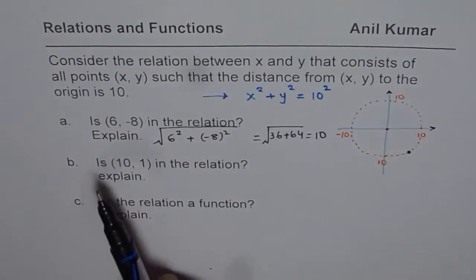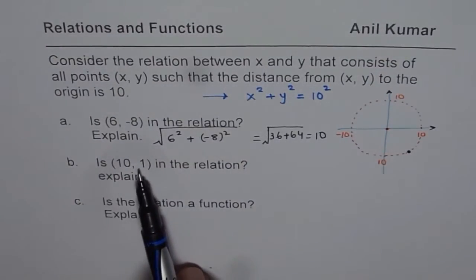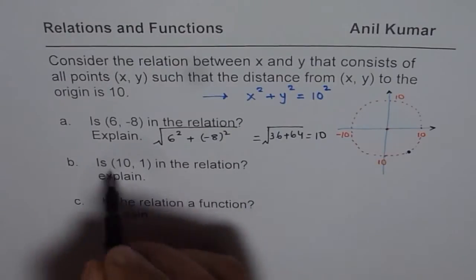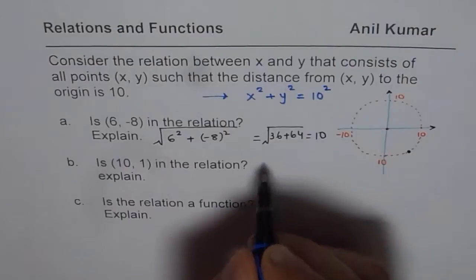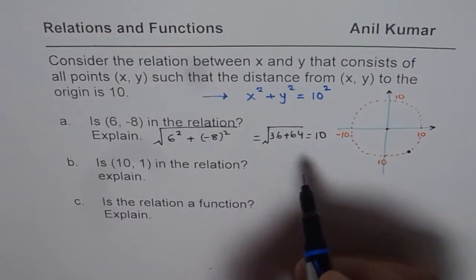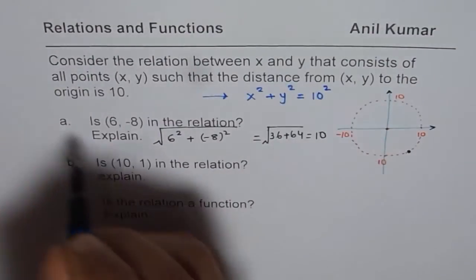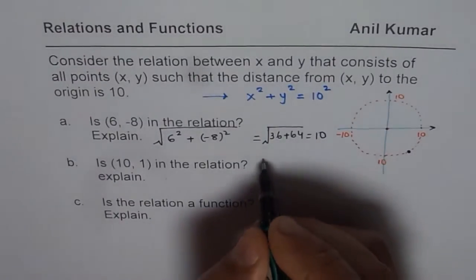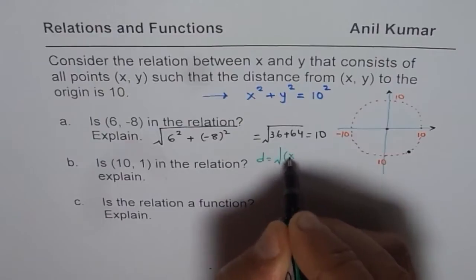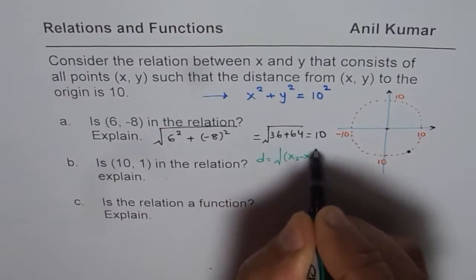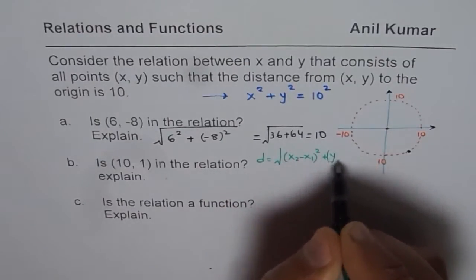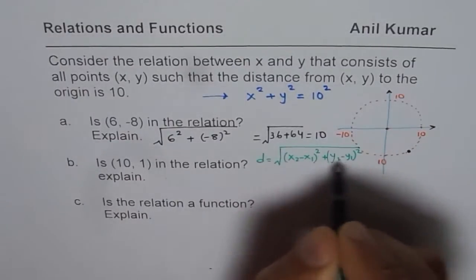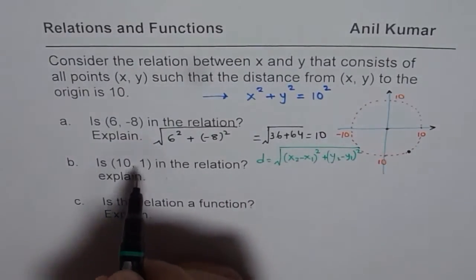Let us look into part B, which is (10, 1) in the relation or not. Well, we can find the distance from origin. To find distance, the formula being used here is, let me write down the formula. Distance equals square root of (x₂ - x₁)² plus (y₂ - y₁)². That is the distance formula.